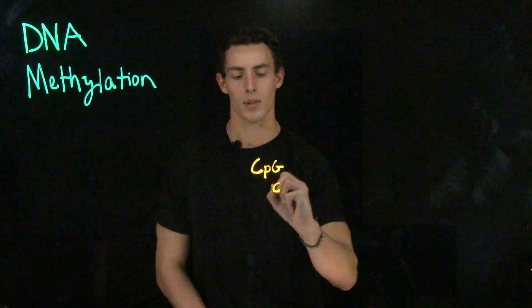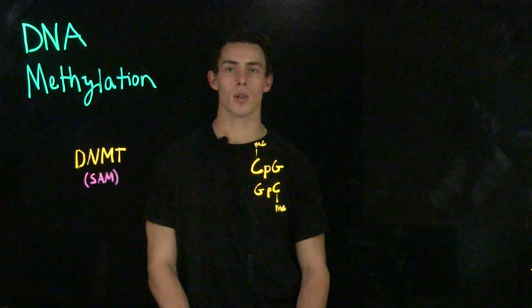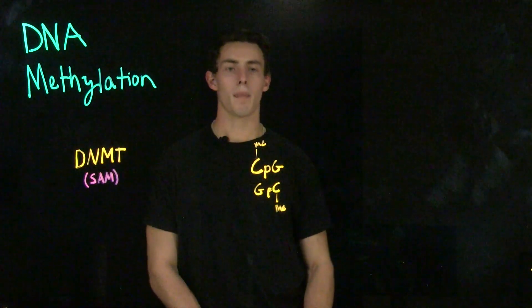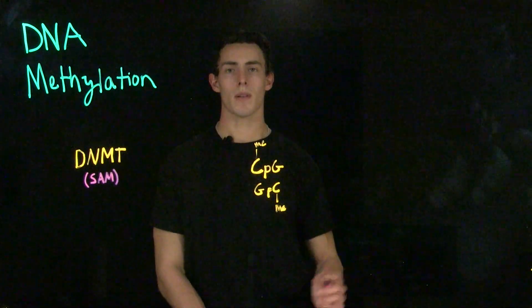CpG islands denote that we have cytosine, a phosphate, and a guanine in series. And because DNA is complementary and anti-parallel, on the complementary strand we would have CpG in the other direction going from 5' to 3'. In the CpG islands, we will always methylate the cytosines. DNA methylation at CpG islands occurs via an enzyme called DNA methyltransferase. DNA methyltransferase uses a cofactor called S-adenosylmethionine, or SAM, which is a methyl group donor. A methylated cytosine is called 5-methylcytosine because we're putting a methyl group onto the 5th carbon of the pyrimidine ring.